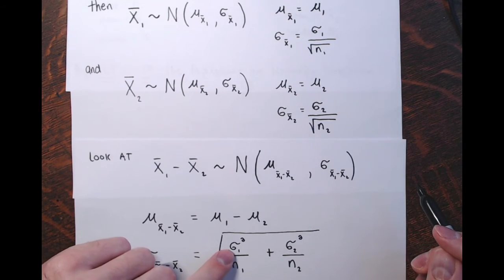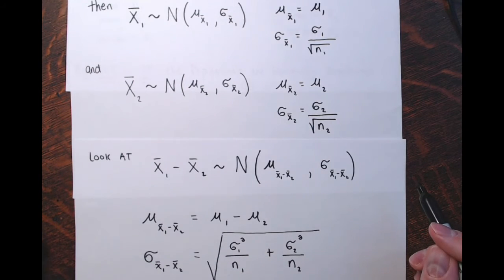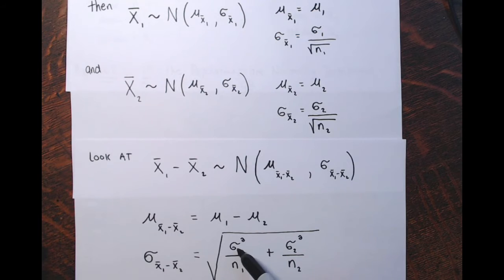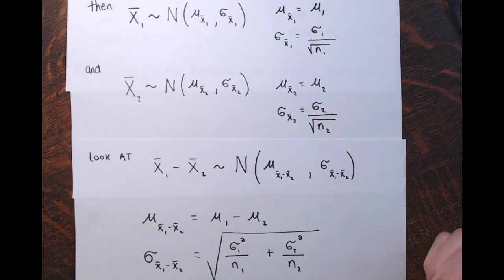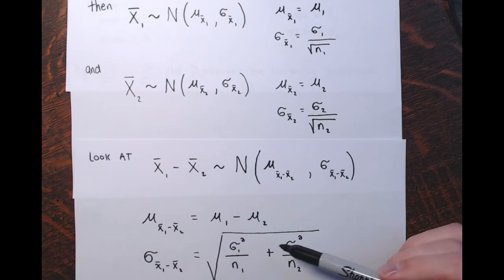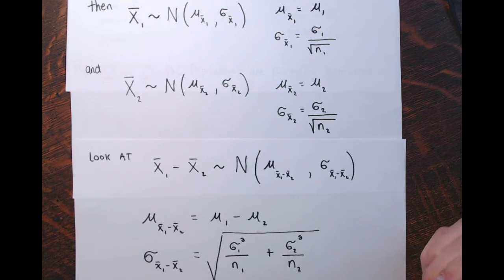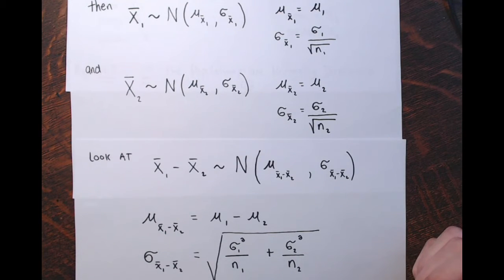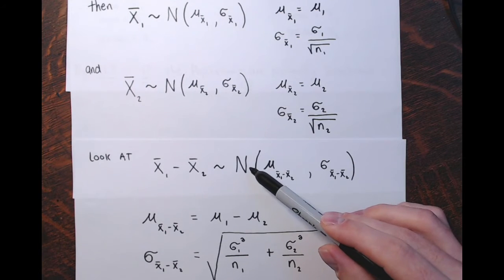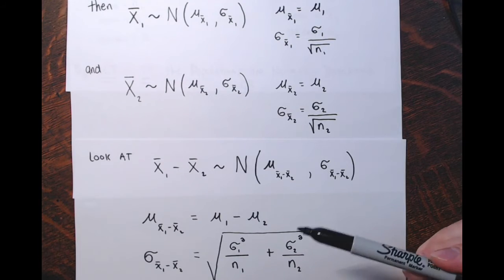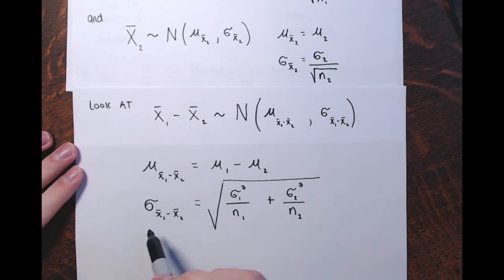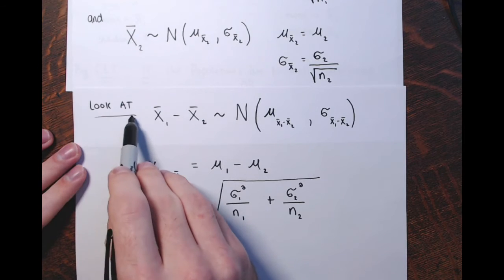We're supposed to know what sigma 1 and sigma 2 are, so we can actually calculate this. If we didn't know what these were, we'd be working with a Student's t-distribution instead, using s1 and s2, the sample standard deviations. But we're supposed to know these population standard deviations here, so we're dealing with a normal distribution and you see sigma 1 and sigma 2 here.